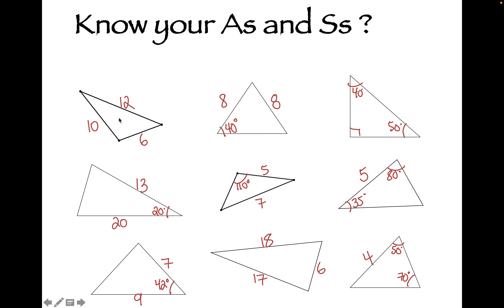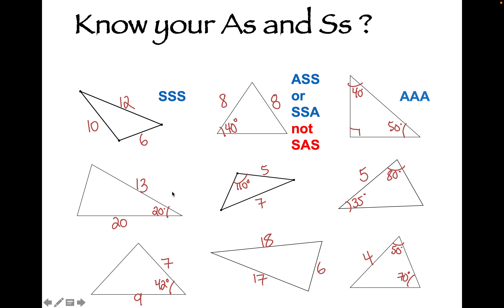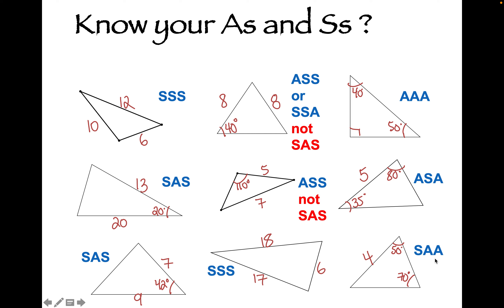Now name each of these triangles based on what is known. The first: side, side, side. The next: it can be angle, side, side — or equivalently side, side, angle going backwards — but SAS does not work because you skip too many parts. Next: angle, angle, angle. Then: side, angle, side. Then: angle, side, side — or SSA reversed — but not SAS. Next: angle, side, angle. Then: side, angle, side. Then: side, side, side. And the last: side, angle, angle — or equivalently angle, angle, side.